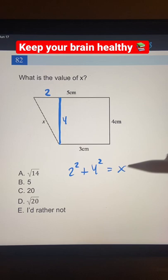So two squared plus four squared, that's equal to 20. So now we have 20 is equal to x squared. If we take the square root of both sides, we get x is equal to the square root of 20, which is choice D.